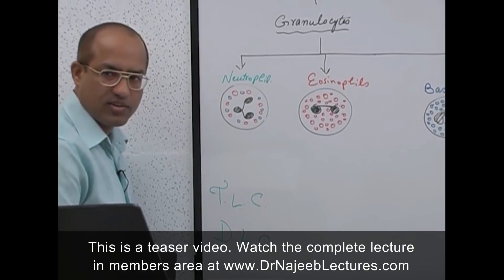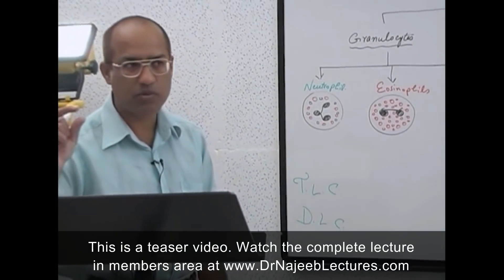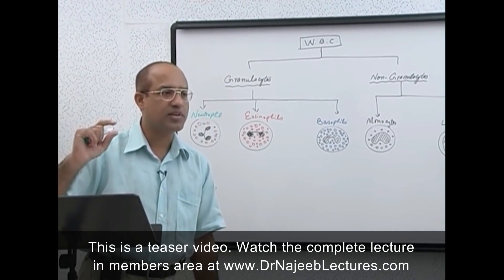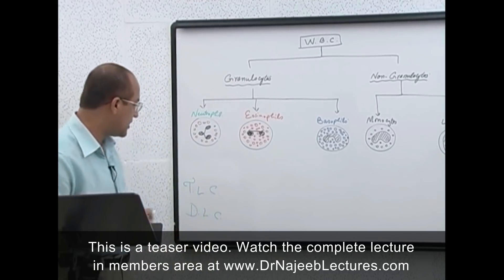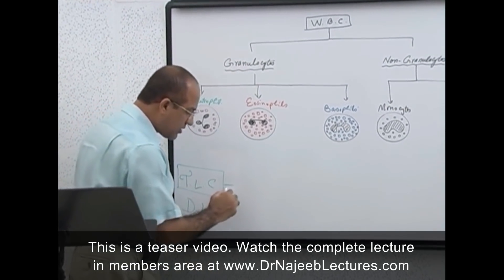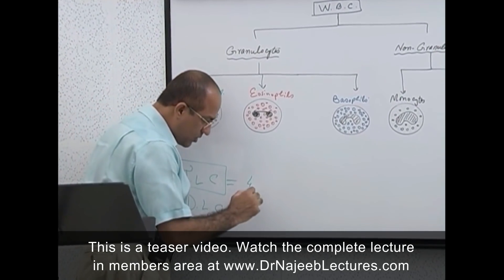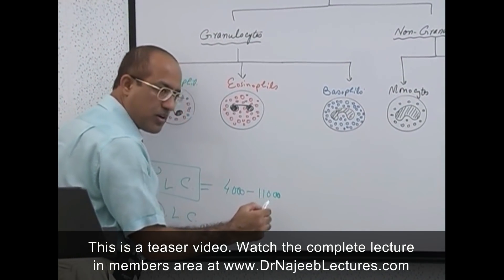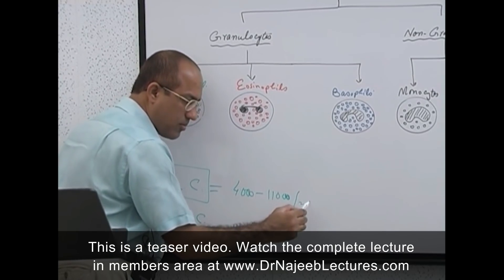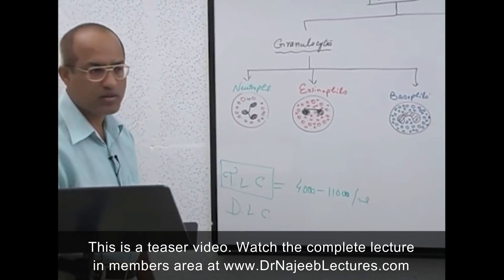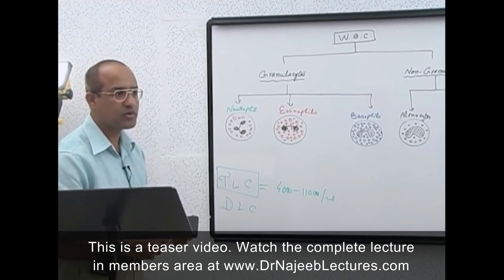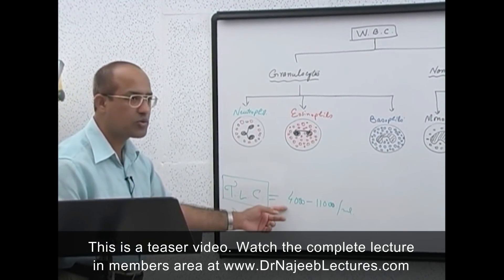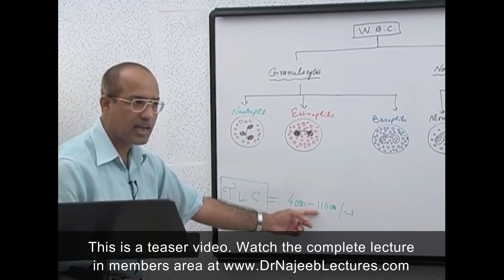If we take one drop of blood — about one cubic millimeter — how many white cells are present in a normal person? That is the Total Leukocyte Count. Normally it is somewhere between 4,000 to 11,000 white blood cells per cubic millimeter.